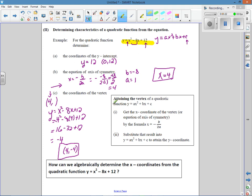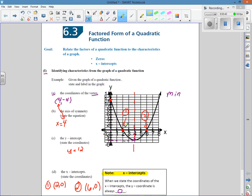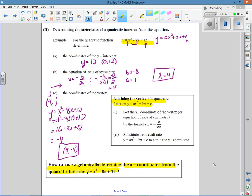And these steps are summarized here. So next question. How can we algebraically determine the x-coordinates from the quadratic function? How can we find out what our x-coordinates are going to be? We know what they should be from the graph. They should be 2 and 6. But how are we going to find them? So now we're going to figure them out.